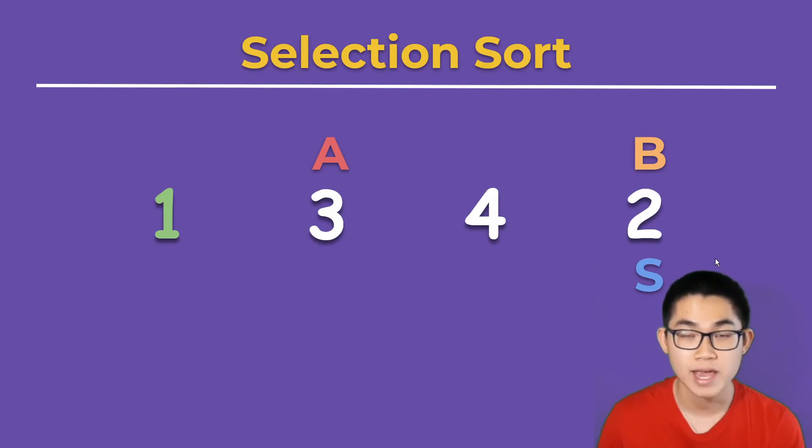B is at the end of the array, so we swap 2 and 3. Now, we know that 2 is in its correct place, and we repeat this process.